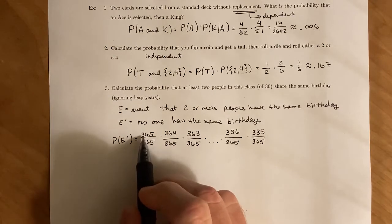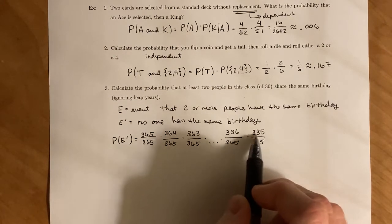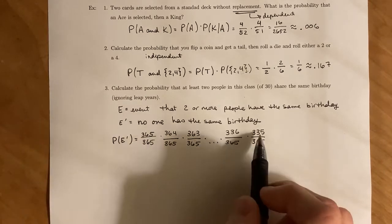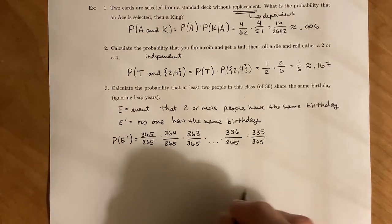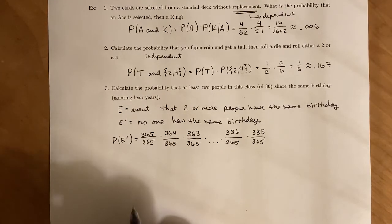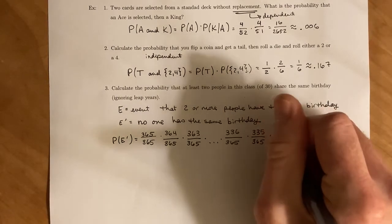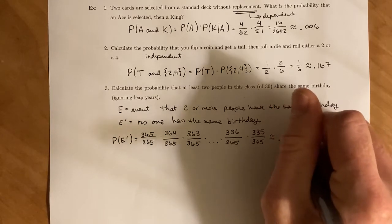Right. And so if you do 365 minus 335, there's going to be 30 numbers in the top. And then there's 30 copies of 365. If you take this multiplication, you get that this is roughly 0.2695.